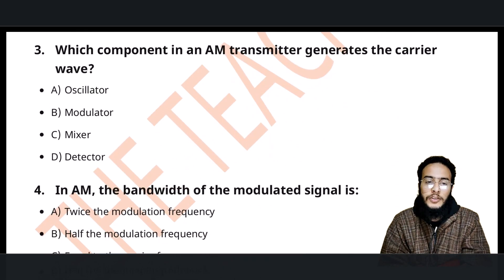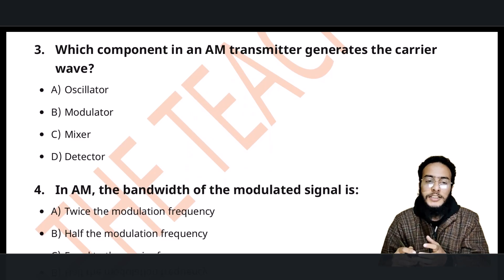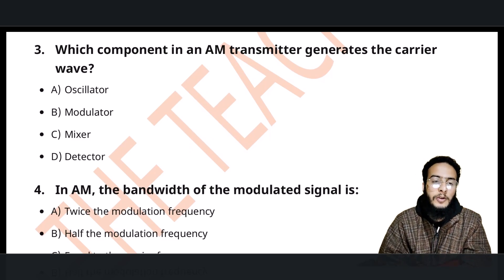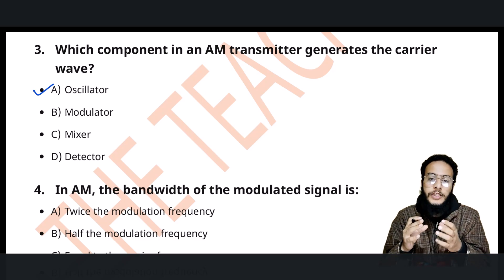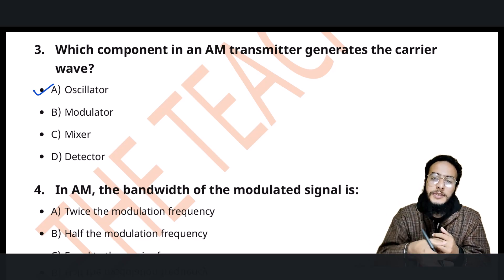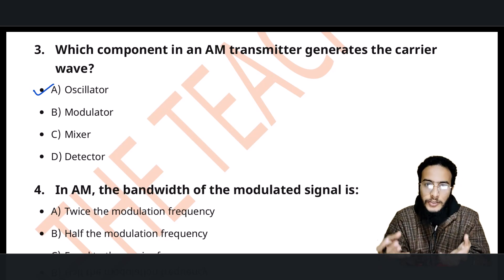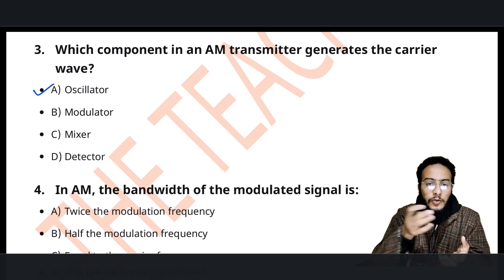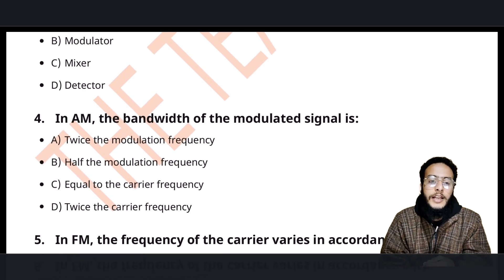The next question: which component of an AM transmitter generates the carrier wave? As I mentioned before, when a transmitter is there, we need the carrier wave to carry the audio signal — whatever signal we want to carry. So the oscillator will play the same role.